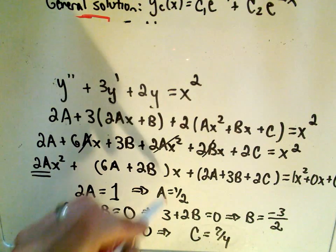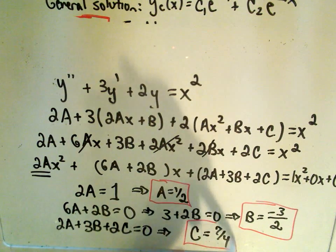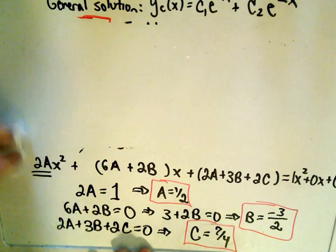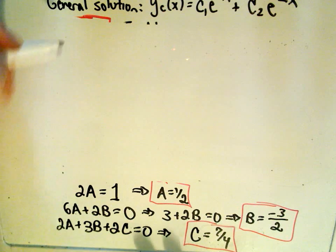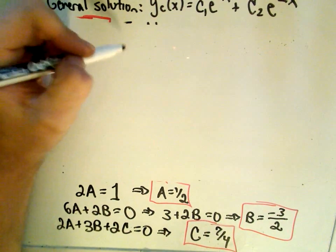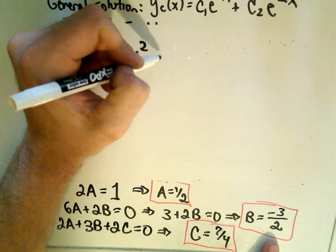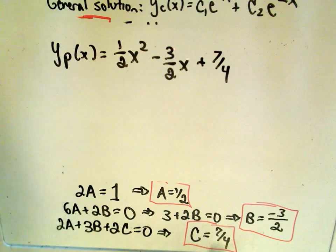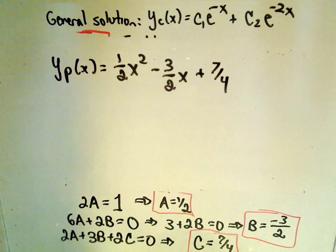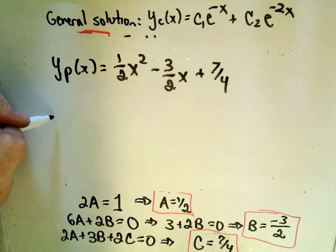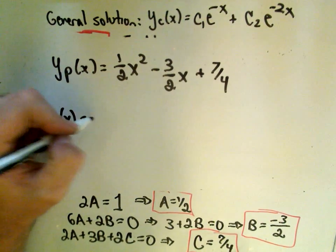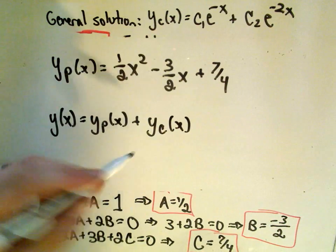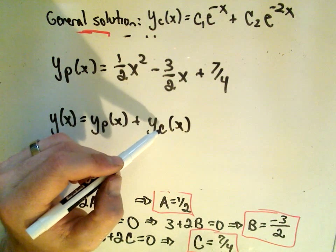So now I have figured out my coefficients a, b, and c. So our particular solution was of the form, so we said our particular solution generically was going to look like ax squared. We had plus bx, so we'll have minus 3 halves x, plus c, which is 7 fourths. We have our original general solution here from the very beginning of the problem. So it says our solution to the whole problem, y of x, it says we just take our particular solution and add to it our general solution, the solution to the homogeneous equation.